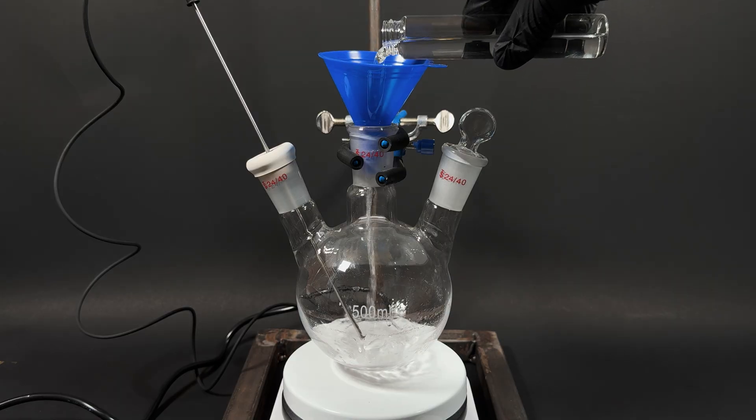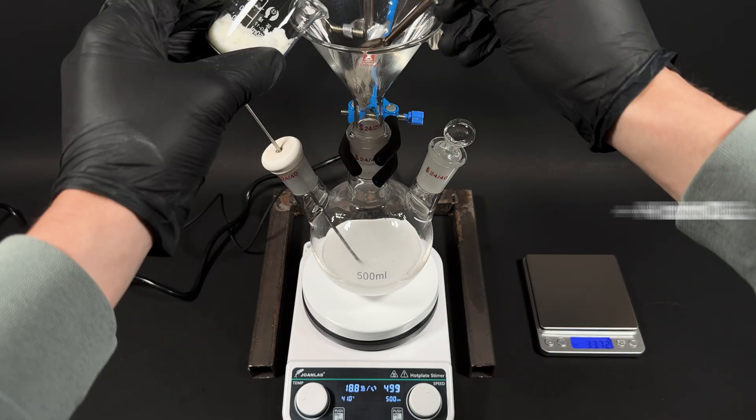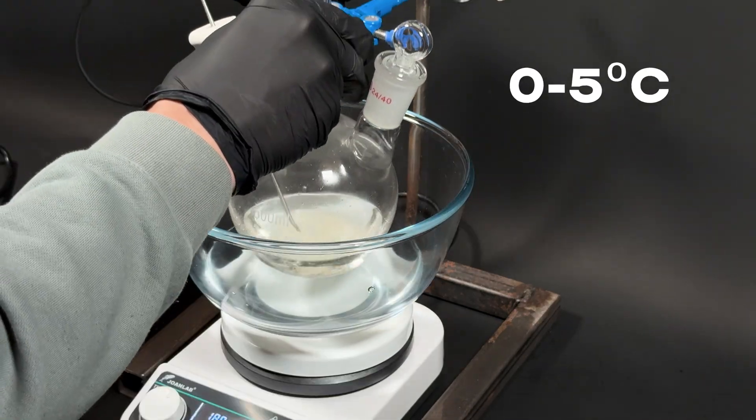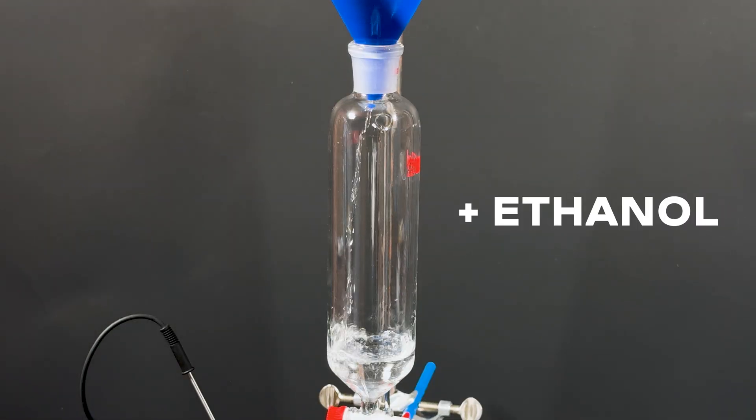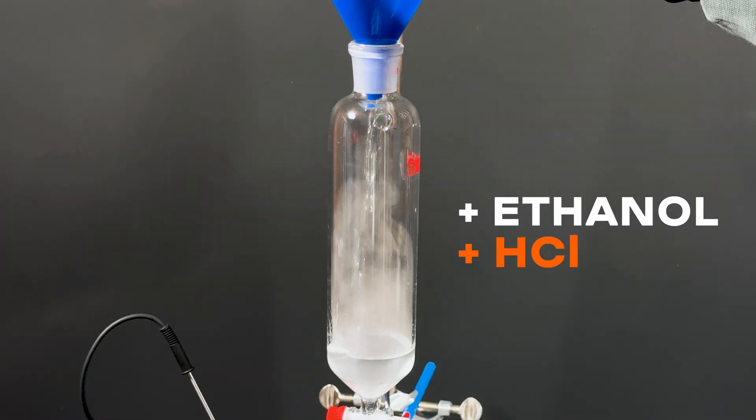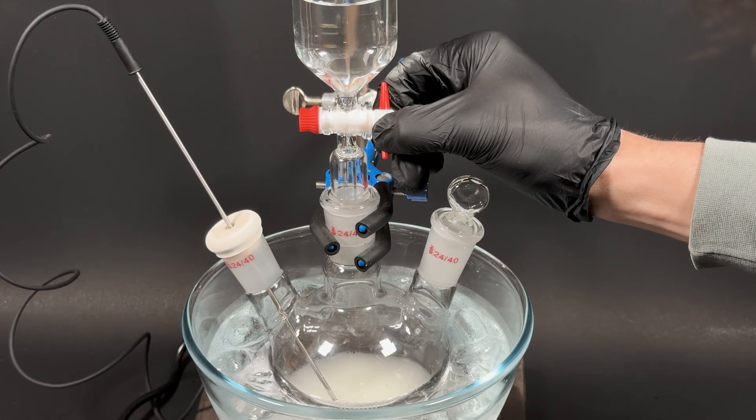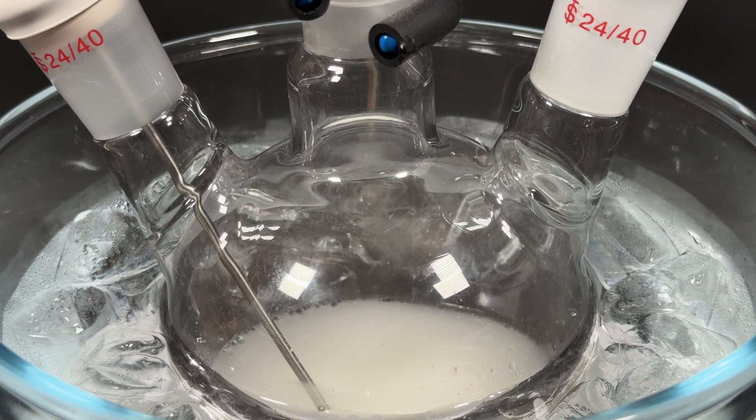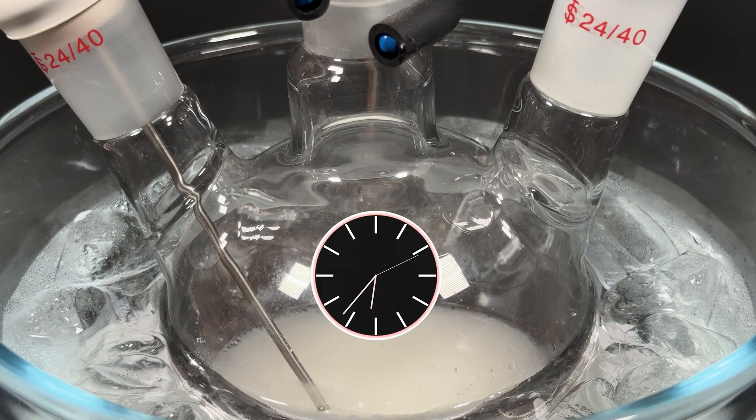I pour limonene into a flask. Add water and ethanol. Start stirring and add sodium nitrite. This reaction needs a temperature at 0-5 degrees Celsius, so I cool it with an ice salt bath. Now for the smoke show. I pour ethanol into a funnel and add concentrated hydrochloric acid, then slowly drip this mixture into the flask. For those curious about the detailed chemistry and mechanism, I've got a separate file link in the description. I leave the reaction for 6 hours.